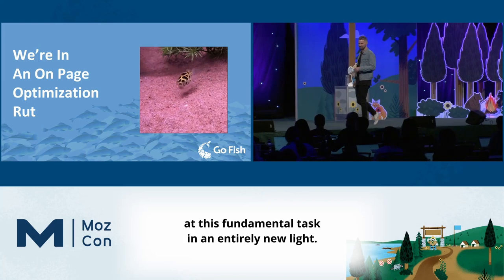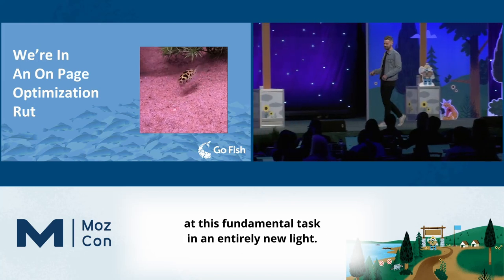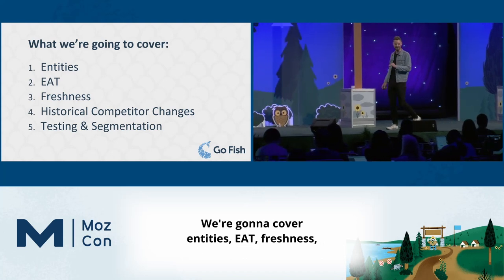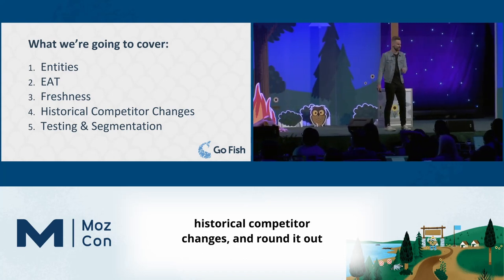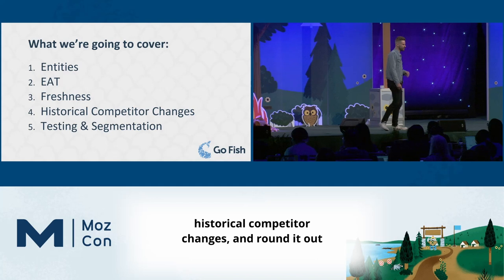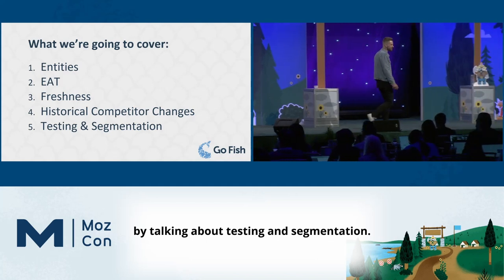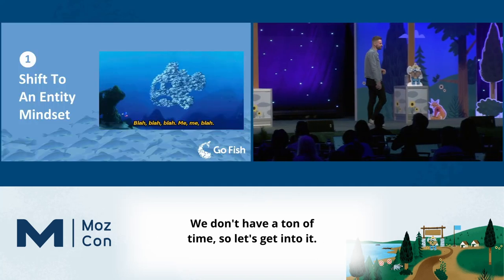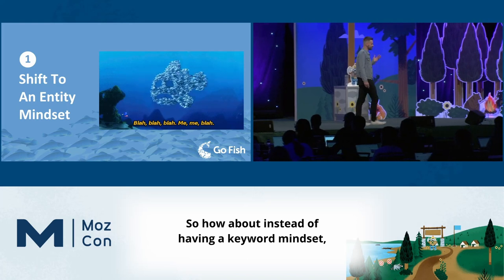Today we're going to put on-page optimization on its head and look at this fundamental task in an entirely new light. We're going to cover entities, E-A-T, freshness, historical competitor changes, and round it out by talking about testing and segmentation. We don't have a ton of time, so let's get into it.